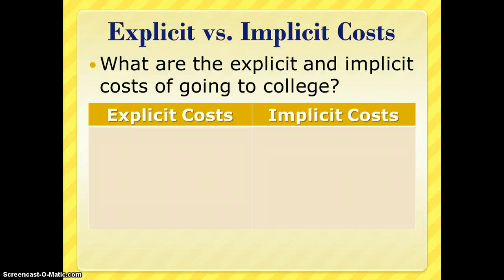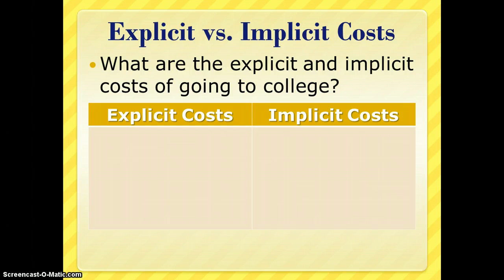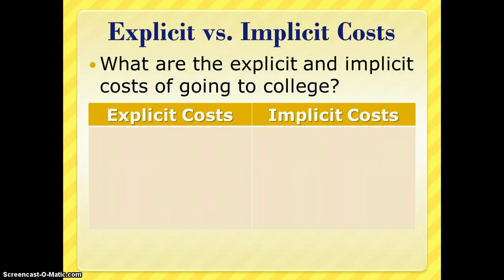When it comes to costs, we have two types: explicit and implicit. Explicit costs are out-of-pocket expenses — money you actually spend to acquire something. Implicit costs are the opportunity costs of your time, money, or any resource you own that you don't pay out of pocket for — essentially the value of benefits you give up by not using your resources in a different way.